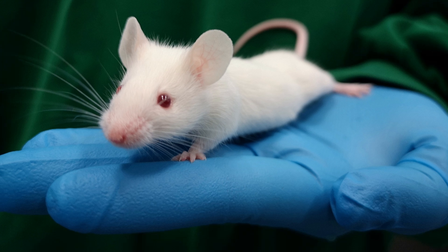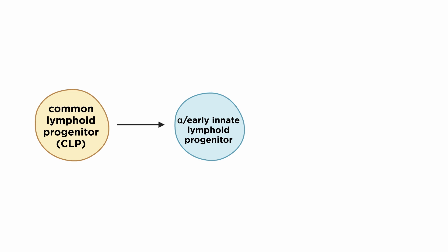Most of the studies regarding ILC development stages have been elucidated in mice. Scientists first demonstrated that ILCs and adaptive immune lymphocytes originate from a common lymphoid progenitor, CLP. Two populations of cells have been shown to demonstrate the ability and restriction to generate all ILC populations; thus, they cannot differentiate into B and T cells. These are known as alpha-lymphoid progenitors, or alpha-LPs, and early innate lymphoid progenitors, or EILPs. These cells lack specific transcription factors and markers necessary for B and T cell development.